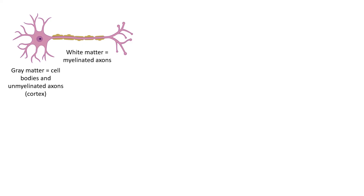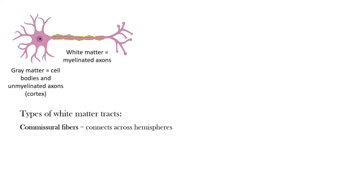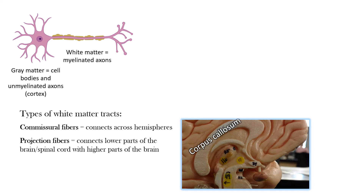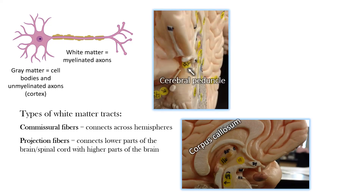Gray matter is the part of the neuron containing cell bodies, while white matter is made up of myelinated axons — myelin is made of fat, which is why it appears white. There are different types of white matter tracts: commissural fibers connect across hemispheres, like the corpus callosum; projection fibers connect top to bottom, like the cerebral peduncle and internal capsule; and association fibers connect different parts of the same hemisphere.